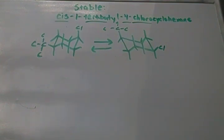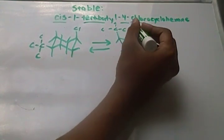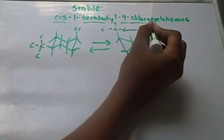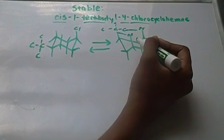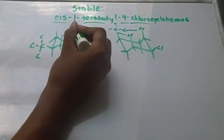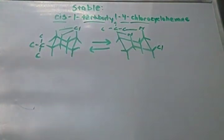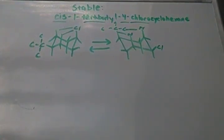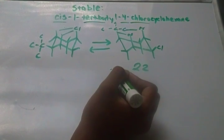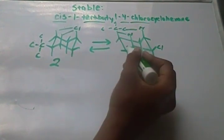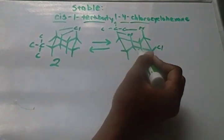Now you just have to choose which one is more stable. In general, you want your bigger substituent equatorial, because if it's axial it'll create more steric hindrance. For instance, this tert-butyl group is going to interact with nearby hydrogens and have less stability compared to the other ring which has the chlorine group axial — it's smaller. If you calculated the energies from your book, you'd see that this was 22 kilojoules per mole and this one was like 2. So this one is obviously not as stable as the other.